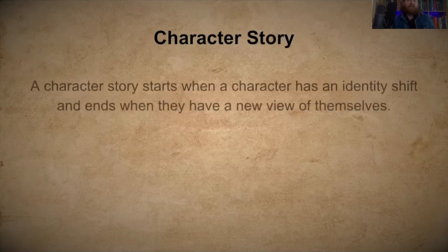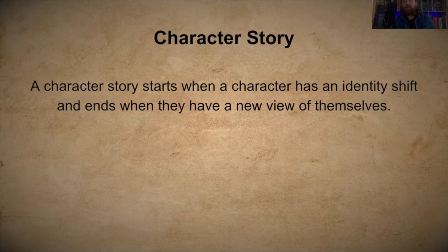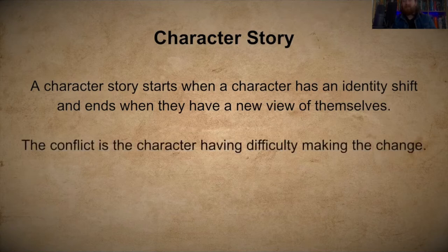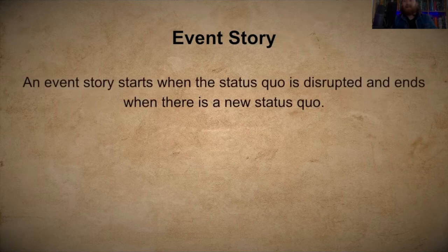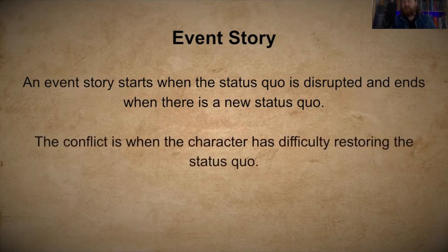A character story begins when a character has an identity shift and ends when they have a new view of themselves — the conflict is the character having difficulty making that change and accepting the new view of themselves. An event story lends itself to an action-packed narrative: it starts when the status quo is disrupted and ends when there is a new status quo or the status quo is restored — the conflict is having difficulty restoring the status quo.